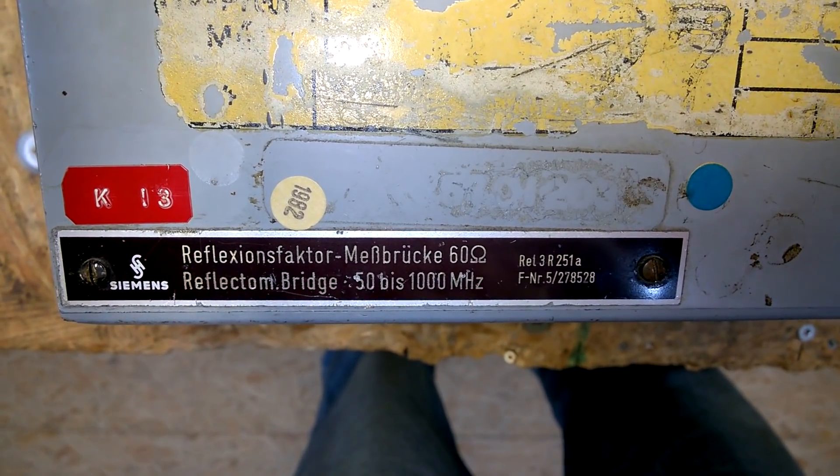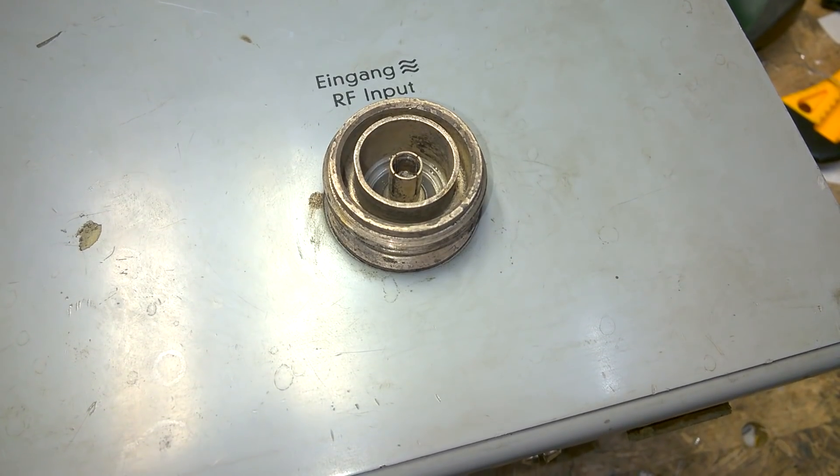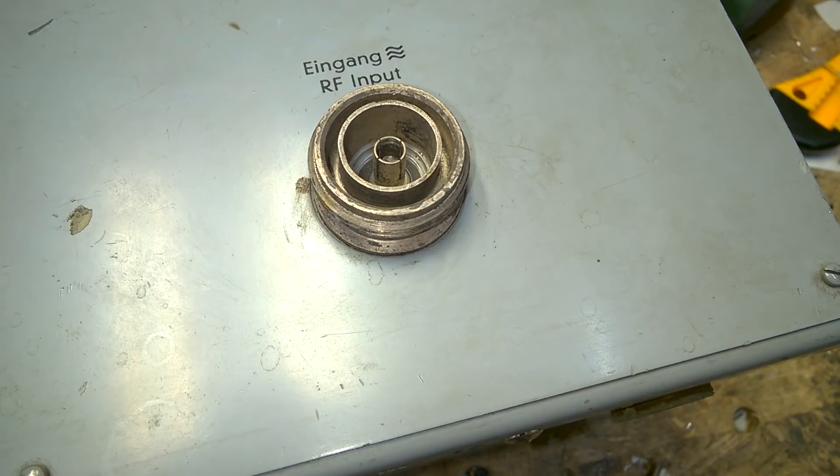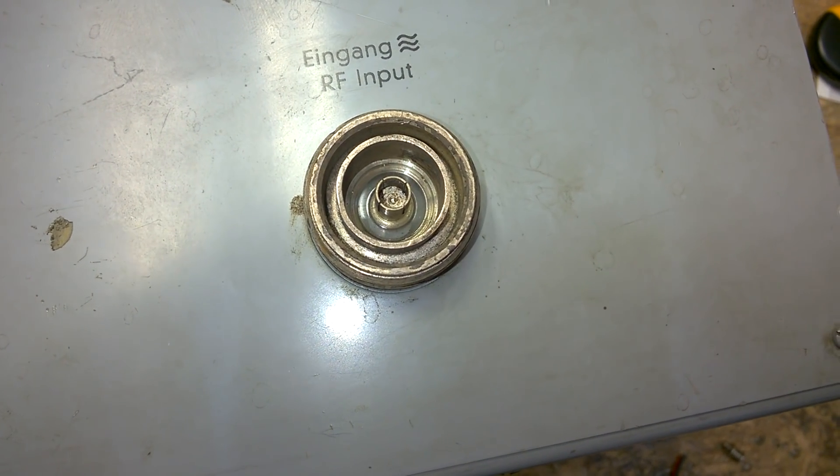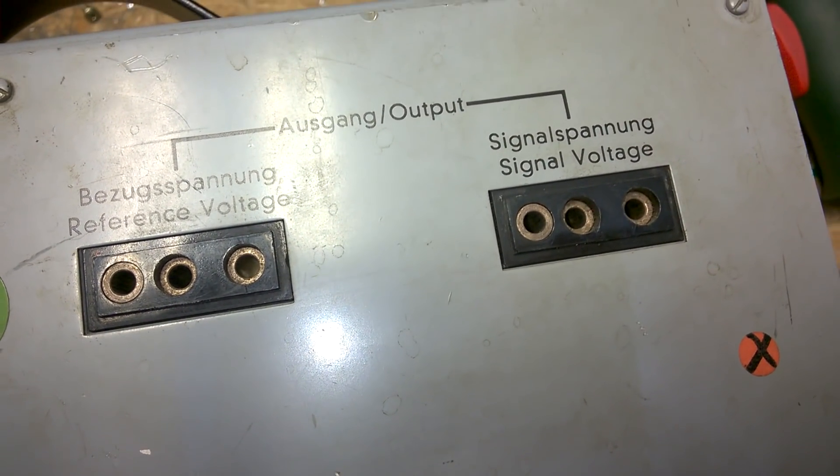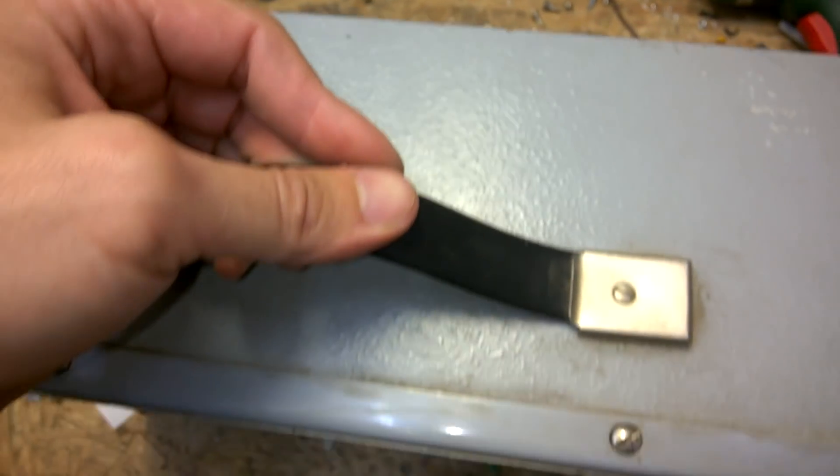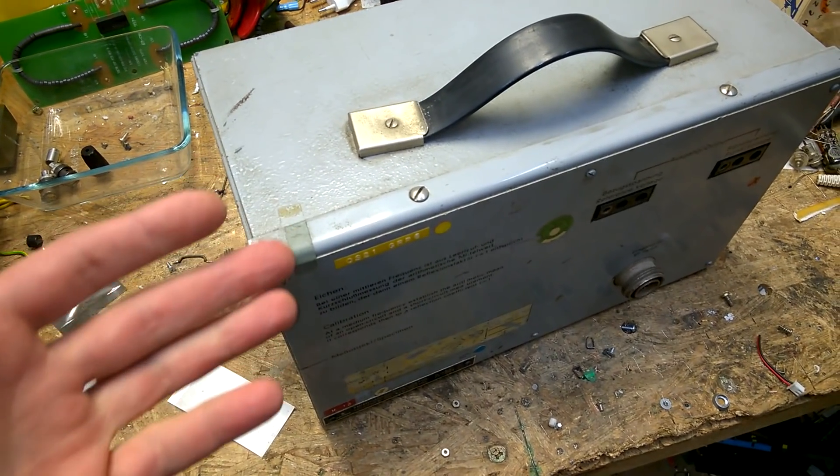The problem with 60 ohms impedance is that no one can really use it. 60 ohms was used by the postal service, but the ham radio amateurs need 50 ohms. So this is a large piece of junk in terms of eBay sale.